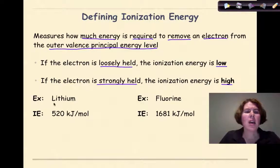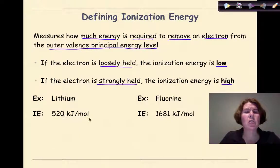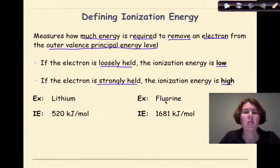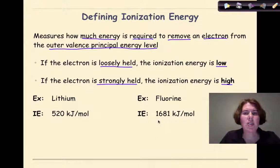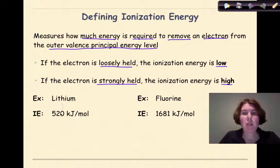Here are some examples of what I mean. If we look at the element lithium, which we know is found in group 1, lithium has an ionization energy of 520 kilojoules per mole. Let's just say for the sake of this tutorial that that's a relatively low amount of energy. Compare that to the element fluorine, which we know is in group 17 and is a non-metal. Fluorine has an ionization energy of 1,681 kilojoules per mole, almost three times as much energy as lithium. The general trend is that metals will have low ionization energies, while non-metals like fluorine will have higher ionization energies.